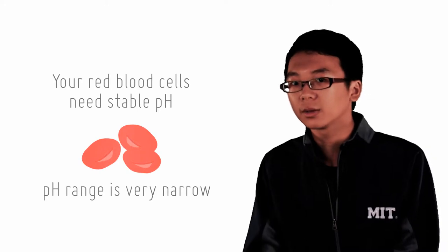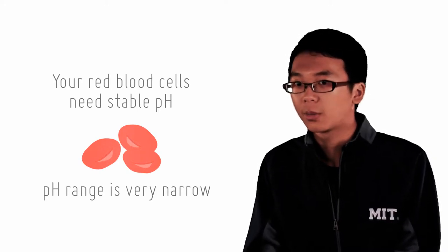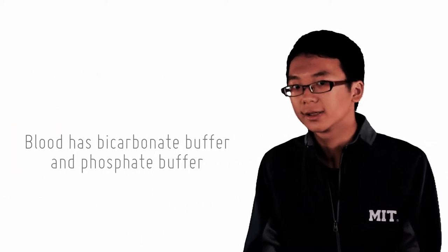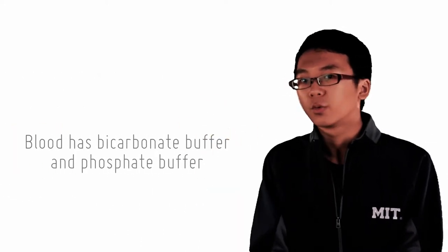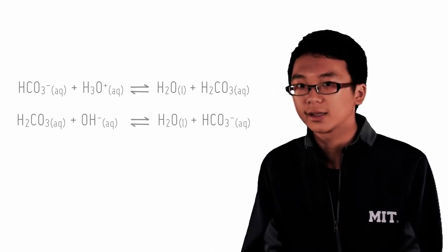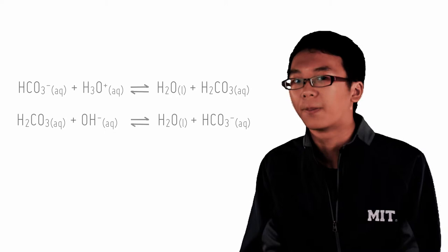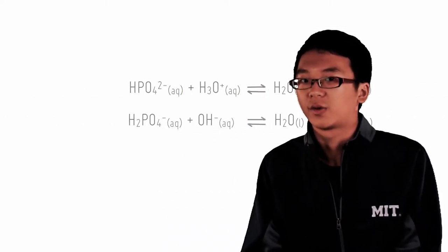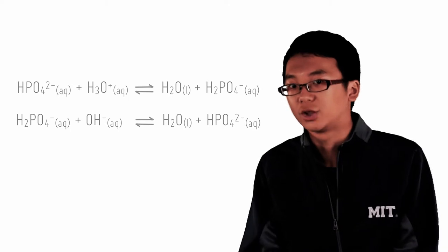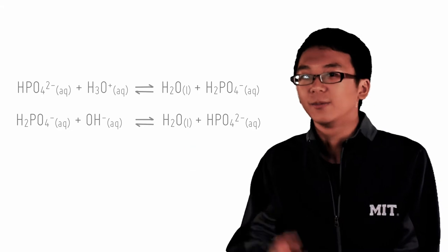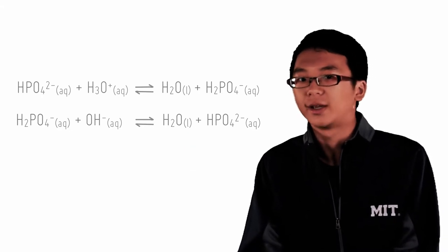The buffer is made up of multiple buffers actually. The two most common buffers are the bicarbonate buffer and the phosphate buffer, which work in the following ways. The bicarbonate buffer will react with excess acid to form carbonic acid, while carbonic acid will react with excessive base to form bicarbonate. Same for phosphate. HPO4²⁻ reacts with excess acid to form H2PO4⁻, and H2PO4⁻ reacts with excess base to form HPO4²⁻.